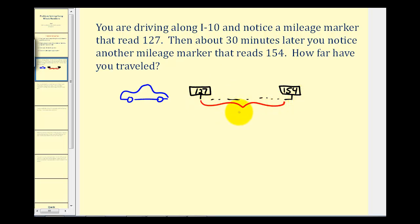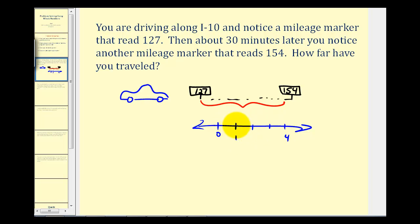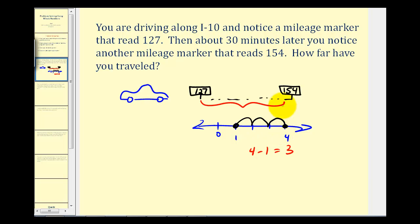If it's not clear how to approach this, you may want to look at a number line and consider two numbers that are much closer together. Let's say we want to determine the distance from one to four. If we're at one and we travel to four, that would be three units. So four is three units from one. Instead of counting each unit, what we could do is take the ending value and subtract the beginning value to give us the distance between the two points.